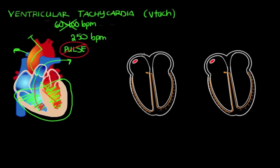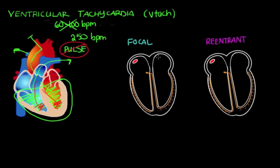Generally speaking, VTAC can be broken down into two types: focal VTAC and re-entrant VTAC. This diagram shows the inside of the heart, highlighting important structures in the heart's electrical conduction system, with the big vessels removed to keep it simple.